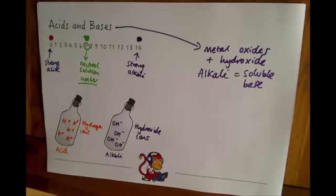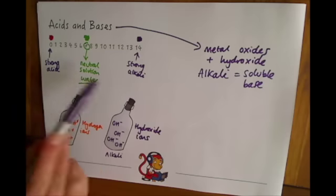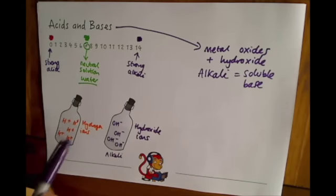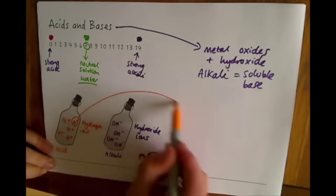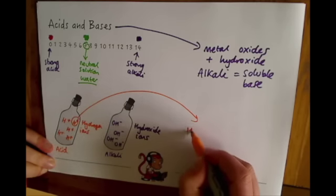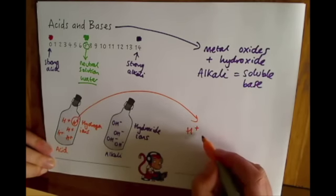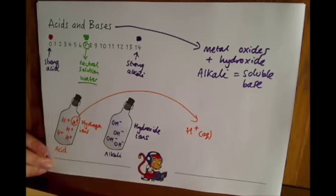And as you can see here, acids react with alkalis to make water. And if we look at these ions, it's going to very clearly show you why. Because if we take some hydrogen ions from the acid, which are in solution, so we put the symbol Aq to show that they're aqueous.